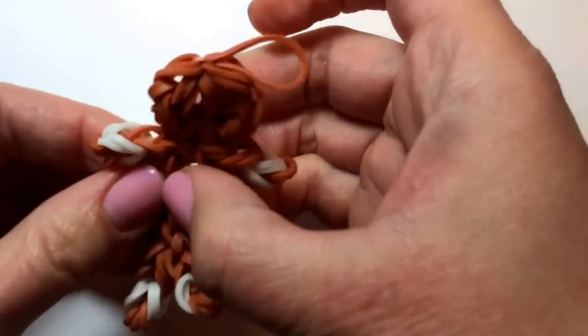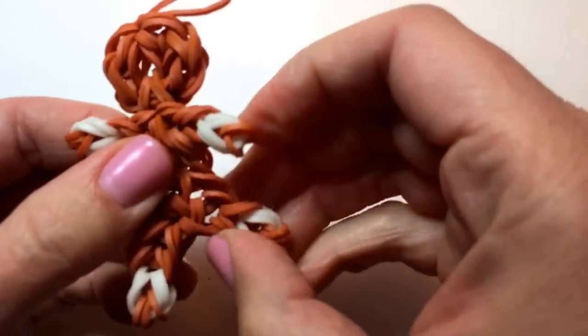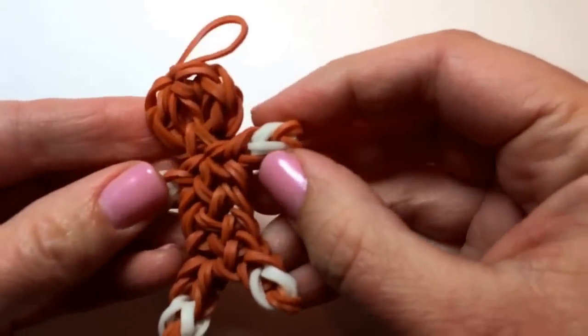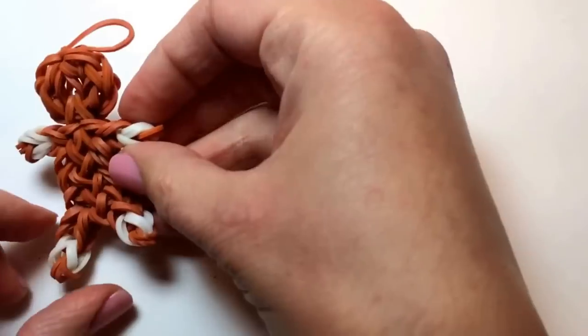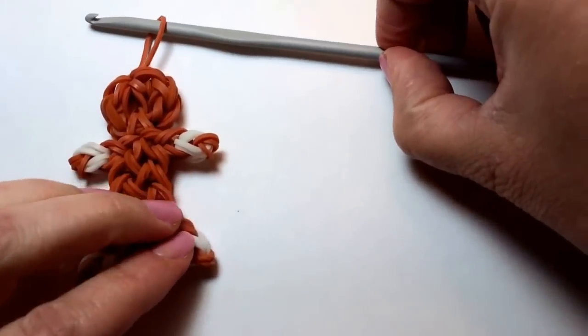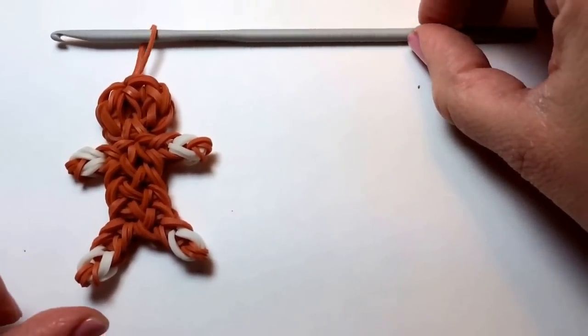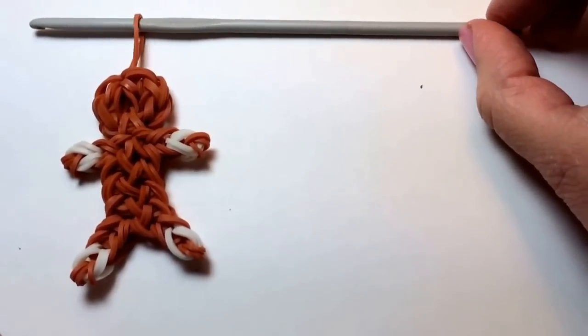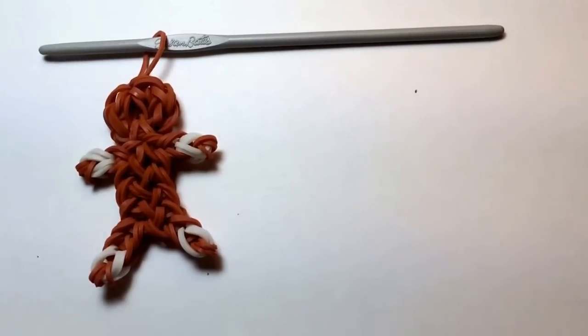You may want to do a little tugging to get all the rubber bands into place. But that is your gingerbread man charm made using just a crochet hook. Thank you for watching. If you enjoyed this video.